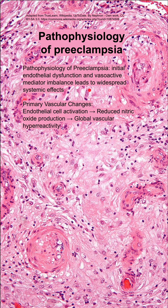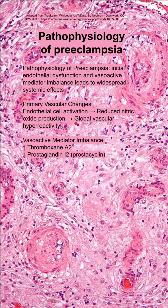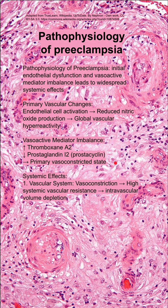The primary vascular changes are endothelial cell activation, which leads to reduced nitric oxide production and global vascular hyperreactivity. You then have vasoactive mediator imbalance — an increase in thromboxane A2 and a decrease in prostaglandin I2, or prostacyclin. This leads to a primary vasoconstricted state.